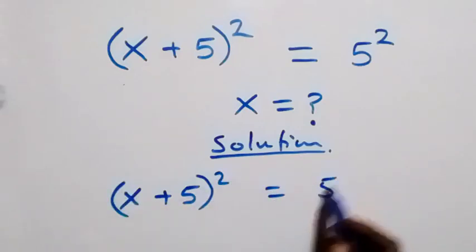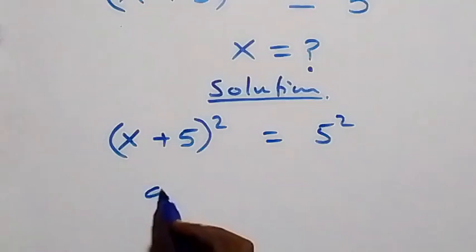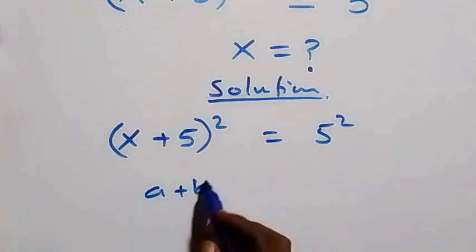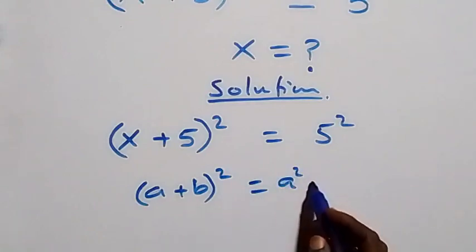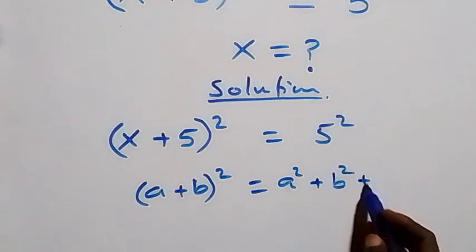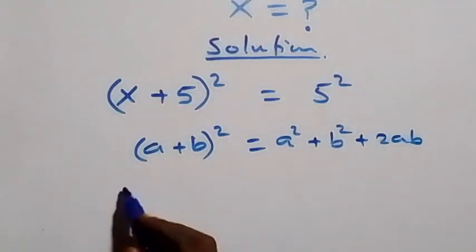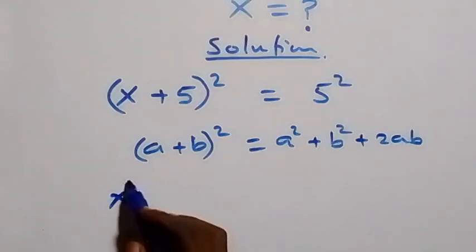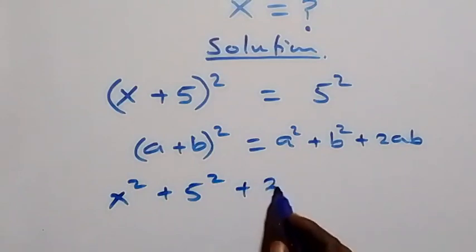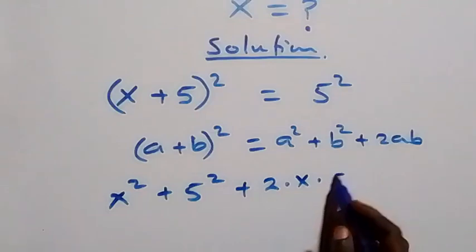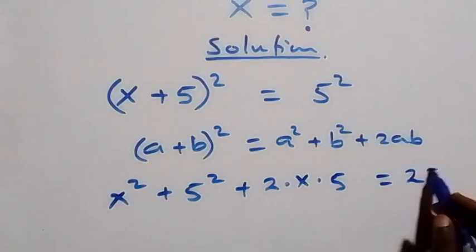This equals five squared. We expand this side following the expansion of (a + b)², which is a² plus b² plus 2ab. So this becomes x² plus 5² plus 2 times x times 5, then equals 5², which is 25.